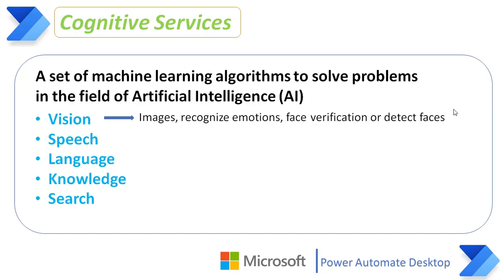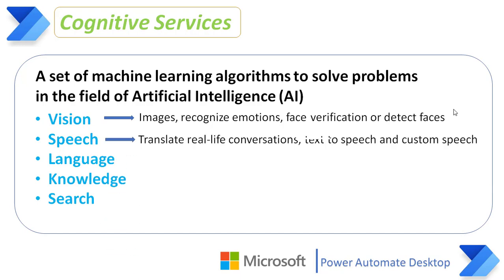Now we will see speech cognitive services. Speech cognitive service provides spoken language capabilities in your application through speech recognition, real-time conversation translation, text to speech, and custom speech services — by which you can customize the language model of the speech recognizer to match the vocabulary and speaking style of your users.